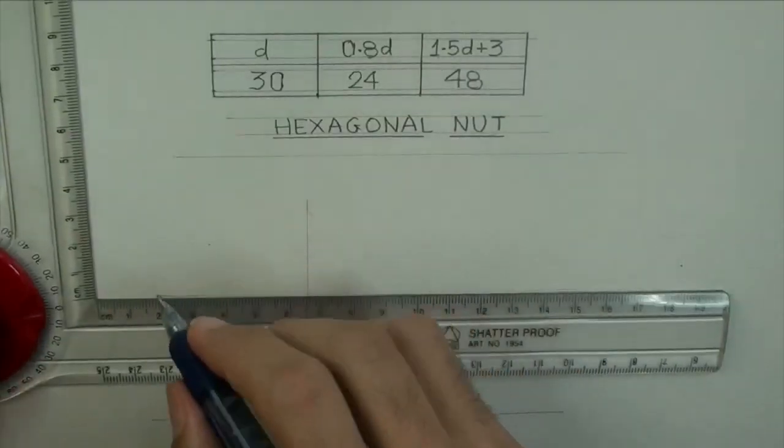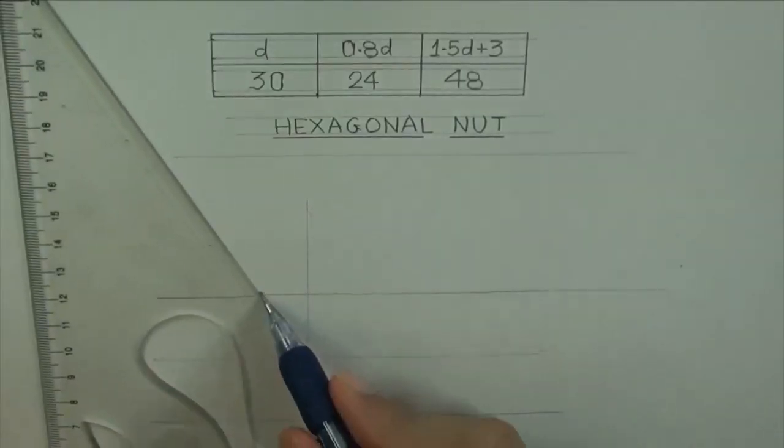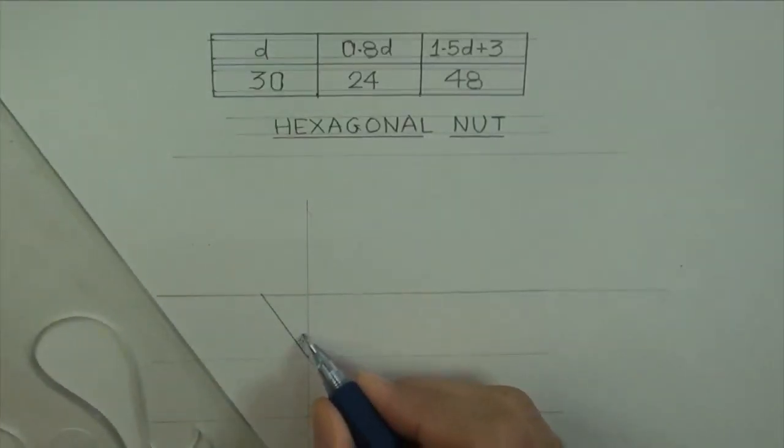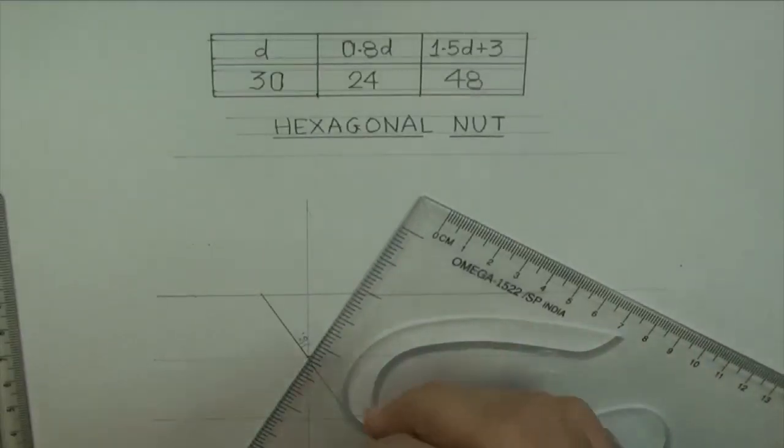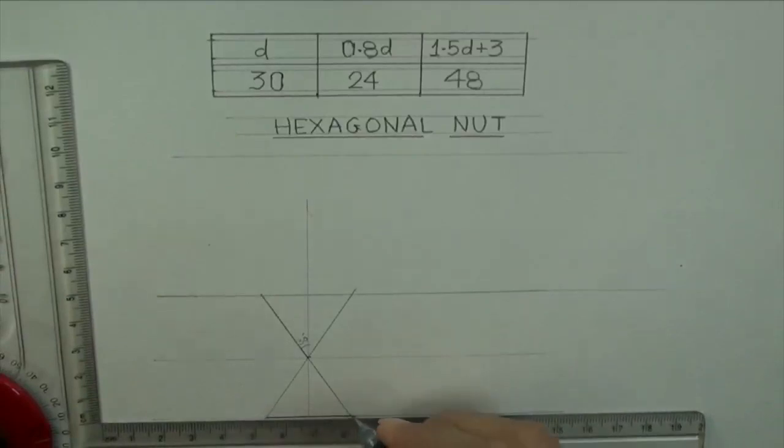First we will take side 1.5D plus 3, we will take the midpoint and we will draw 30-30 degree. See what we are doing, we are drawing top view of a hexagonal nut. So first we are drawing hexagon with across flat method.